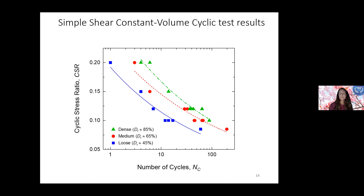Carrying all these results together, a nice way to present them is a plot showing the effect of cyclic stress ratio together with relative density on the number of cycles to liquefaction. We see a very expected response; however, the curves lie at a different spot than what we would get for sandy materials. It's important to have these material-specific curves because they can be used as direct input for certain constitutive models to better calibrate the models we use to predict liquefaction.